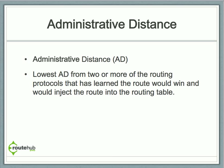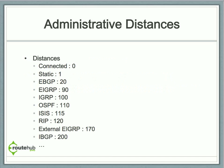So the question is: what is considered the lowest administrative distance between these two? Here is a list of administrative distances for some of the more relevant routing protocols — there are actually more as well. For example, static routes have an administrative distance of 1, EIGRP has 90, and OSPF has 110.